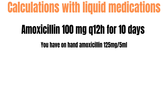Now let's go over calculations with liquid medication. Say a mother came into the pharmacy with a prescription for amoxicillin 100 mg every 12 hours for 10 days, but you only have 125 mg per 5 mL in stock. You need to calculate how many mLs the patient will take since you don't have the exact prescribed concentration. You always want to use what you have on hand and calculate accordingly.